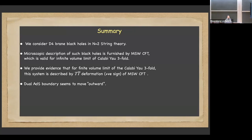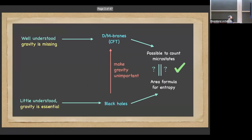When I say N=2, I just mean type 2 — type IIA string theory. So broadly, how black hole microscopic counting works: you have a black hole with a Bekenstein-Hawking entropy, and you want to understand the microscopic origin of that entropy.